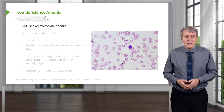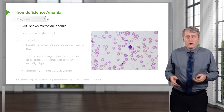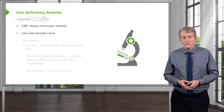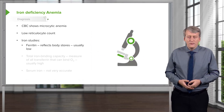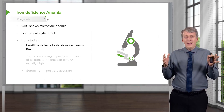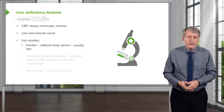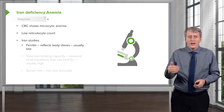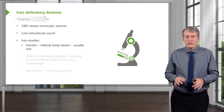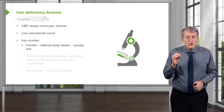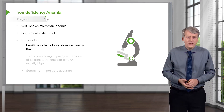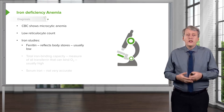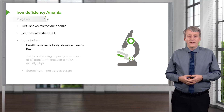For iron deficiency, the CBC will show a microcytic anemia, and patients will typically have a low reticulocyte count. You might want to get iron studies. Ferritin reflects your total body stores and is the best single test for iron deficiency. It is usually low in iron deficiency because it reflects your body's stores of iron.